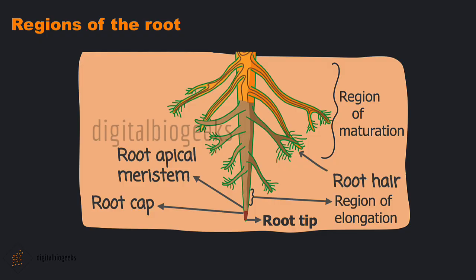Now let's learn about the regions of the root. The tip of the root is known as the root tip, and this root tip is covered by a structure called the root cap. This area penetrates the soil, so it should be strong — the root cap gives protection to the apex of the root while it penetrates the soil. A few millimeters above the root cap is the region of high meristematic activity, known as the root apical meristem.